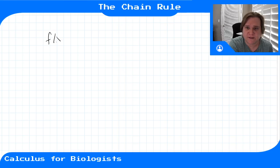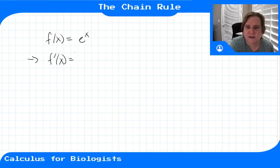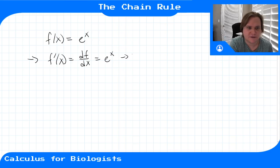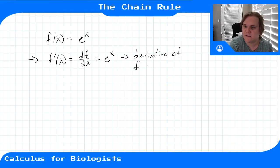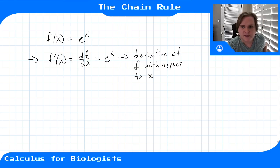Let's start off with an example: f of x equals e to the x. We showed how to calculate the derivative of this function in the previous video. So f prime of x, which we could also write as df/dx — the derivative of f with respect to x — equals e to the x.